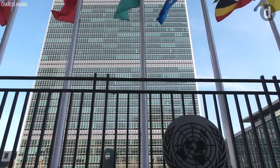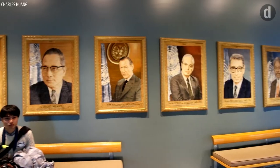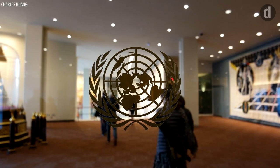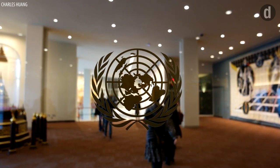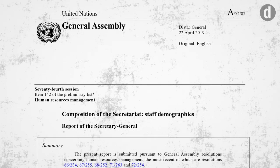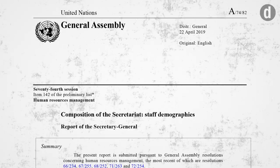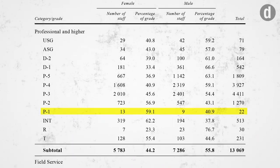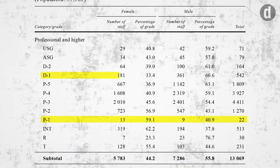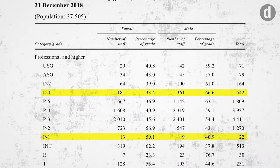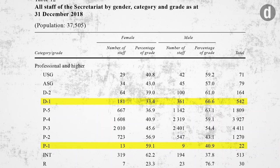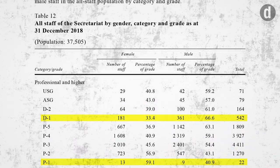Some changes are already visible. Gender parity, for example, is considered a fundamental part of any change that happens at the UN, and Guterres has achieved equality at the most senior levels. Achieving parity across the entire system, though, is still a work in progress. While women make up the majority of entry-level UN staffers, once they reach middle management, participation dropped to as low as 33% at the end of 2018, UN figures show.